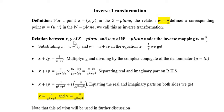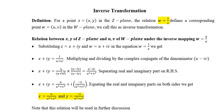Let us obtain the relation between xy of the z plane and uv of the w plane under this mapping w equal to 1 upon z. Substituting z equal to x plus iy and w equal to u plus iv in the equation w equal to 1 upon z, we get x plus iy equal to 1 upon u plus iv. Multiplying and dividing by the complex conjugate of the denominator u minus iv, we get x plus iy equal to 1 upon u plus iv, multiplied by u minus iv upon u minus iv, which equals u minus iv upon u square plus v square.